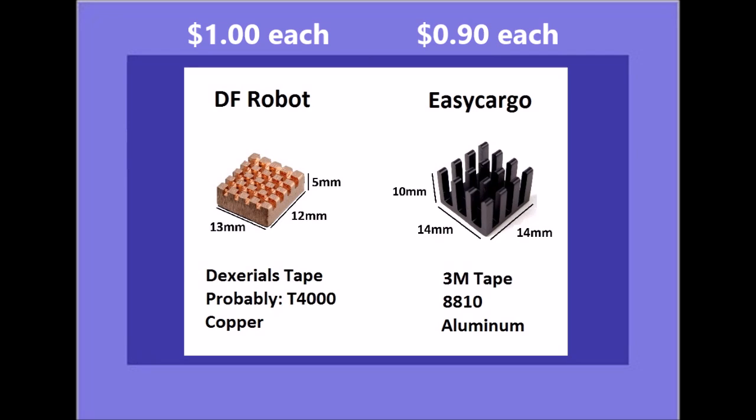The Easy Cargo heatsinks come with the thermal tape already applied. You just peel off the bottom part and install it on the chip. The adhesive tape used is a 3M thermally conductive adhesive tape. It is the 8810 version.